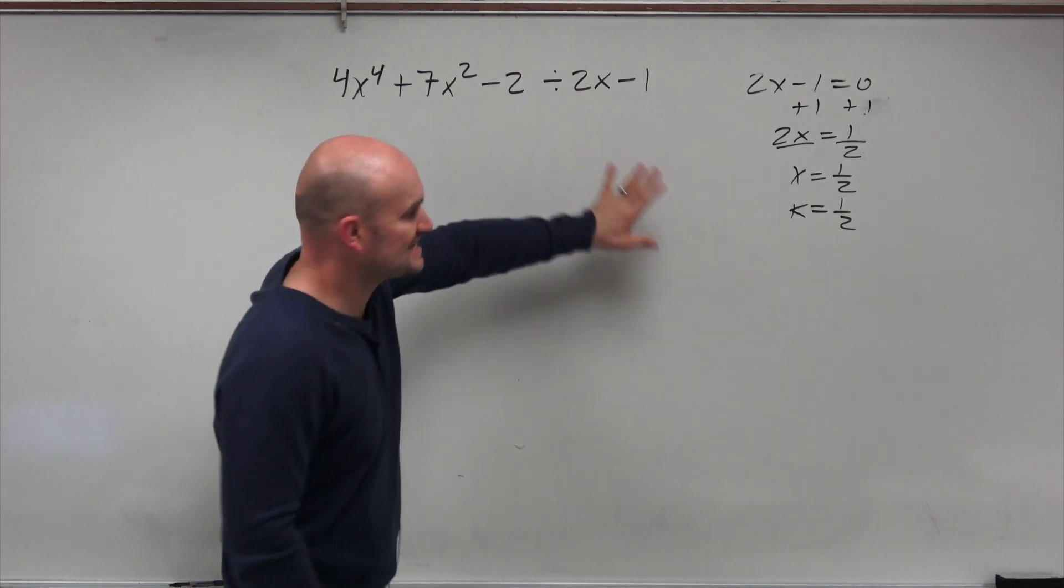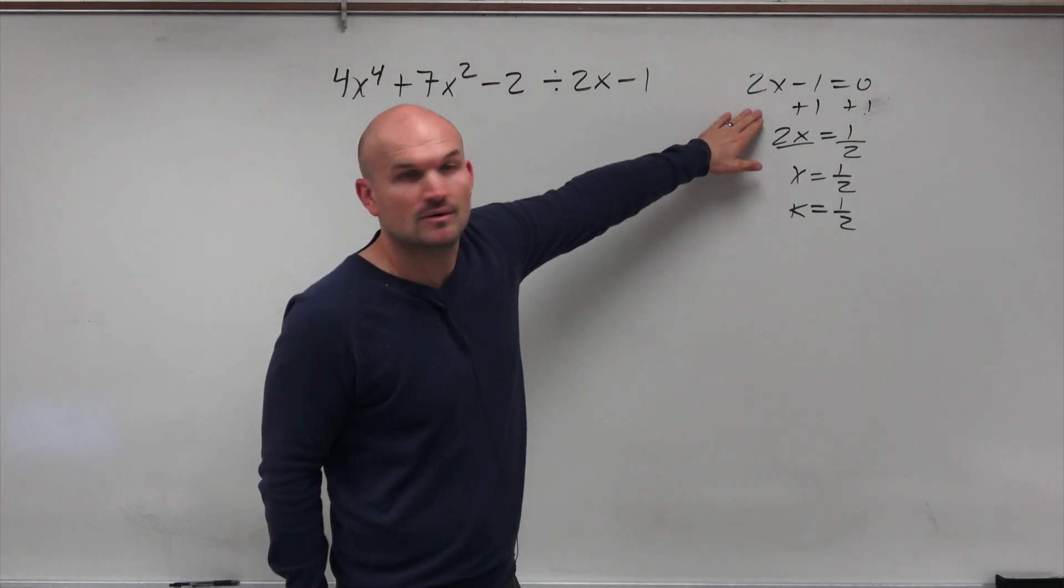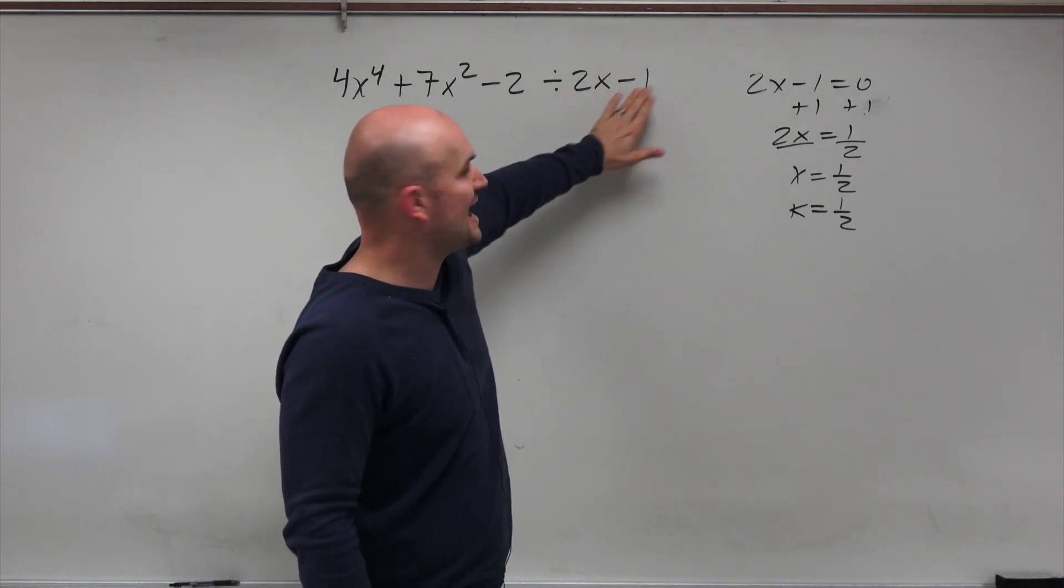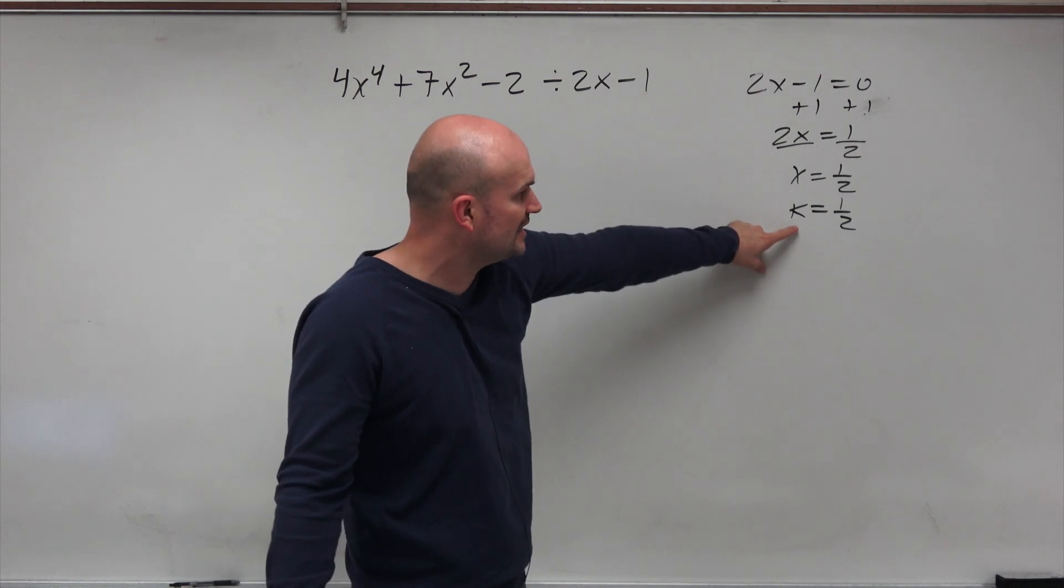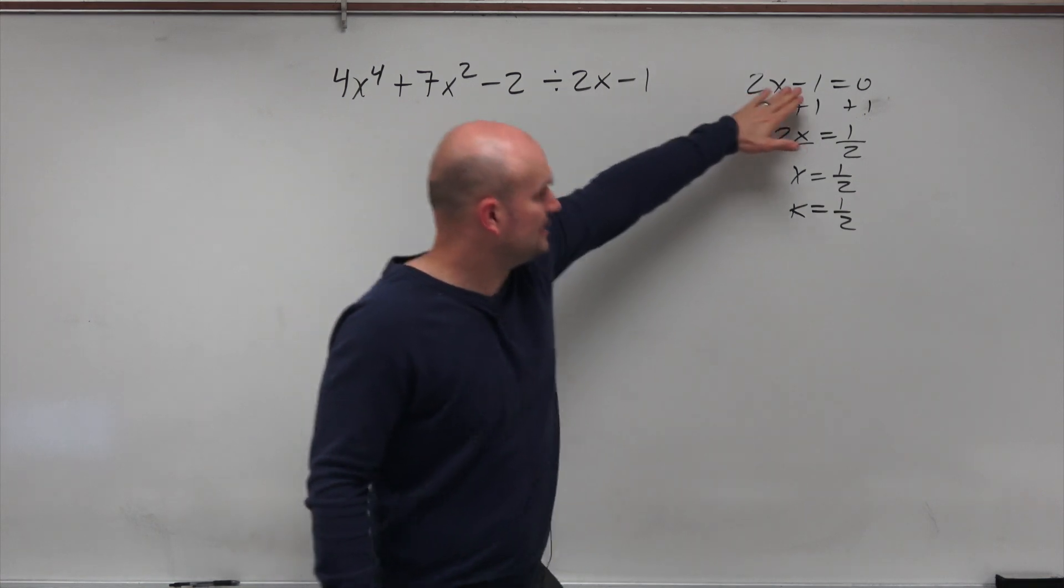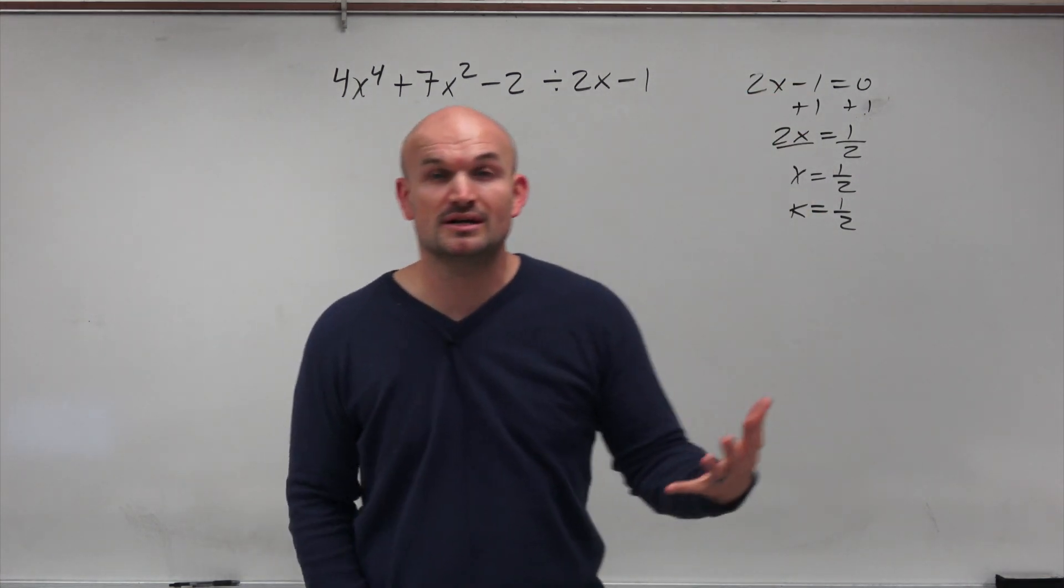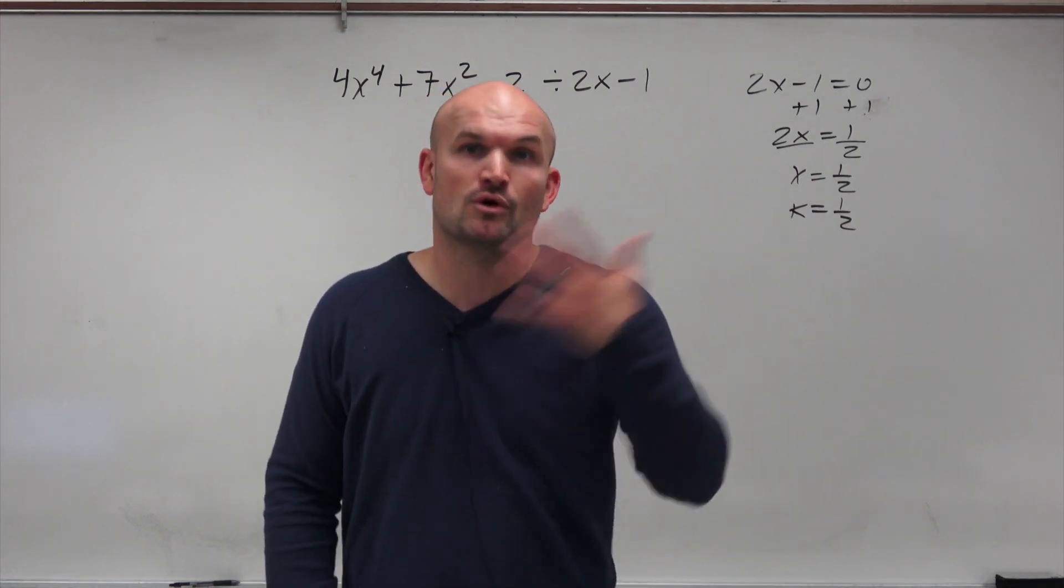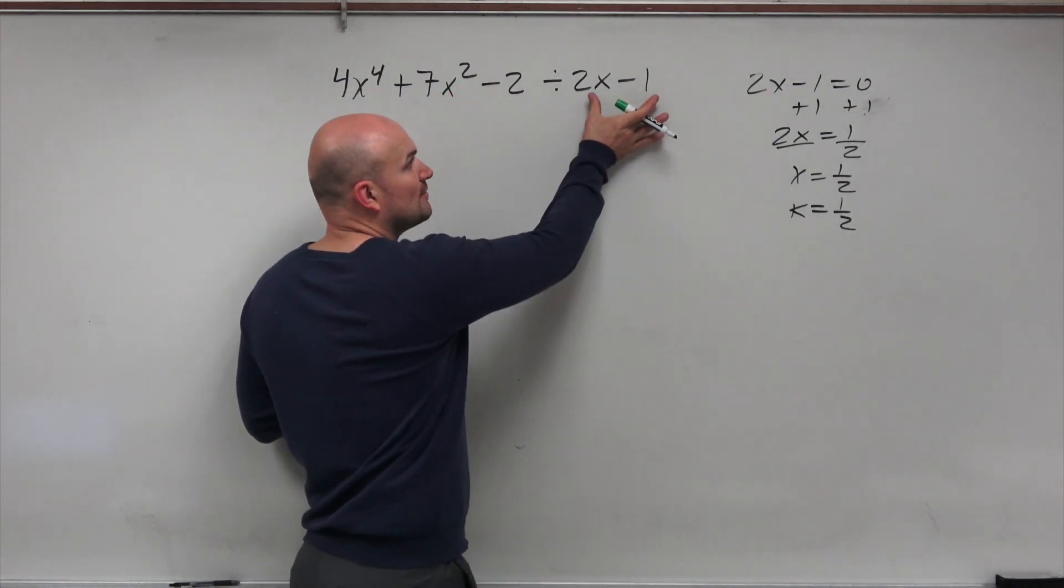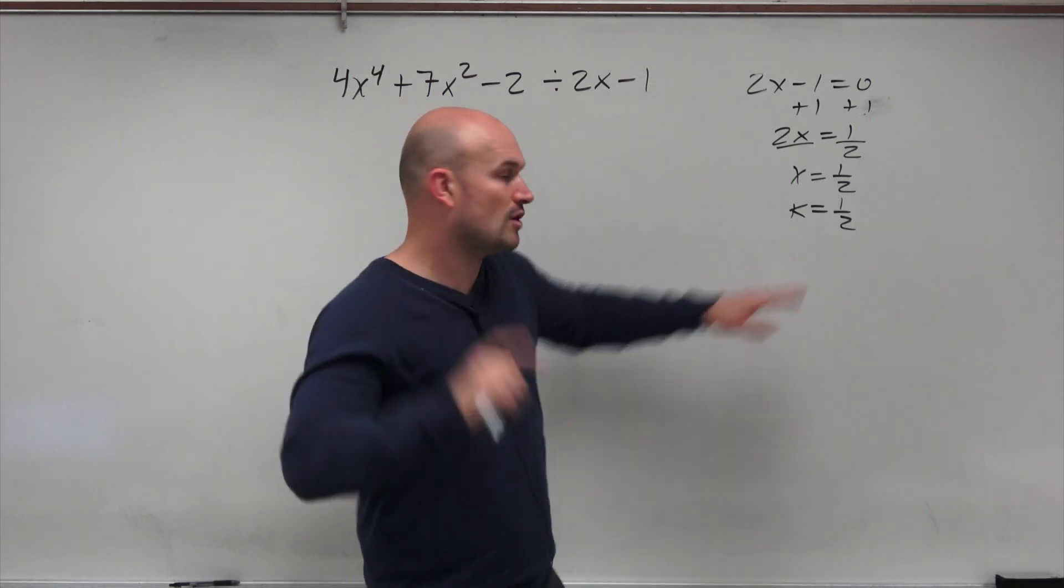I see a lot of times mistakes when students are setting up synthetic division. They won't set it equal to 0. What they'll do is if I just had like an x minus 1, they'll use a negative 1 as k. Well, no, you've got to add one to the other side, so it'd be a positive 1. You can see here, this is a positive 1 half. If you have an expression 2x minus 1, set it equal to 0 and solve. That is going to be your value k. It's also important that you cannot use synthetic division if you have a quadratic or a cubic or any other polynomial to a higher power. We can only use synthetic division when our divisor is going to be linear, meaning we're only going to have one value for our k.